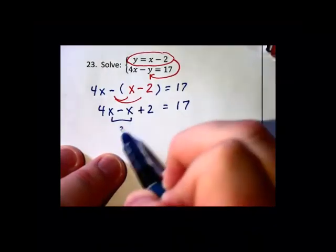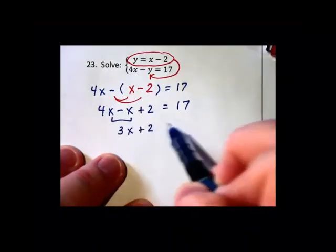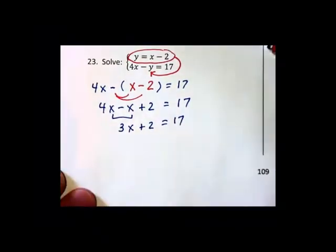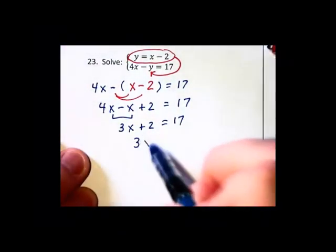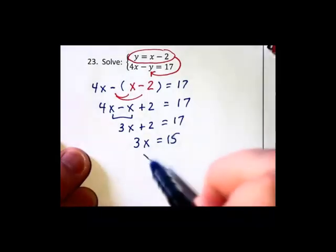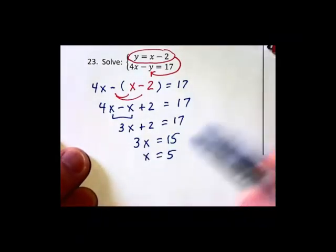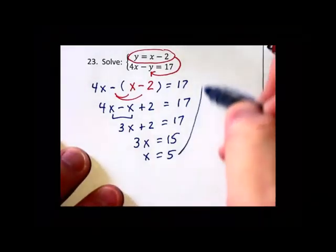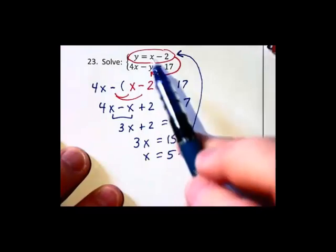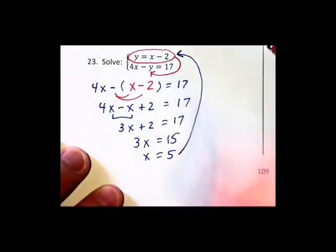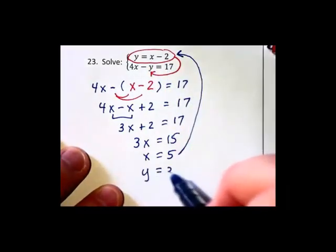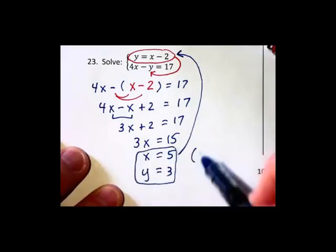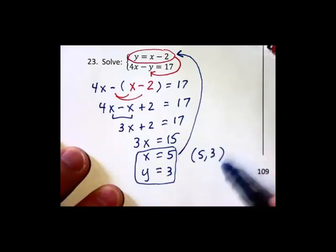Combining like terms we have 3x plus 2 equals 17. We're then going to subtract 2 on each side. 3x will equal 15 and therefore x will equal 5. That's not the end of the problem. You need to take the x, substitute it into the original problem. We're going to get 5 minus 2, which is 3, so y will equal 3. So there's our values and we could write that as a point 5 comma 3.